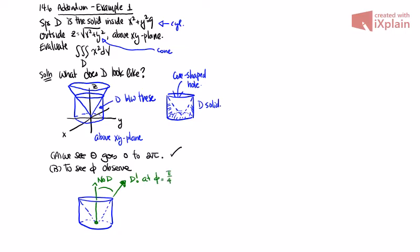And then if you keep going, there is D all the way until here. So here D continues. And here it ends at pi over 2. So that tells us our range. It tells us that we can say thus, phi goes from pi over 4 to pi over 2. That's done.